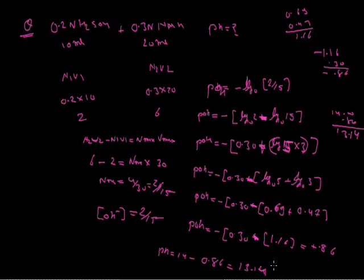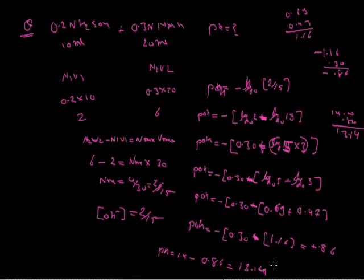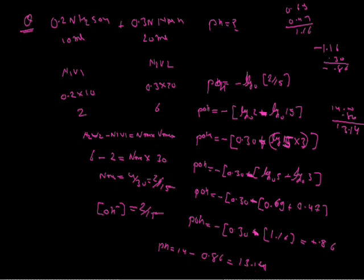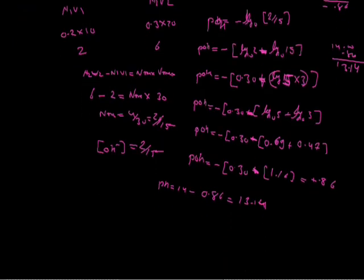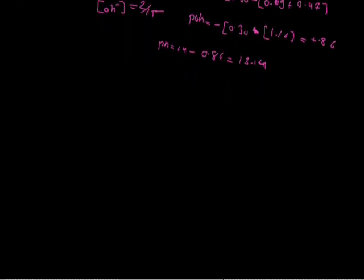So the important summary: if the examiner gives you acid and base in the mixture, first calculate the gram equivalents of acid and base, then check whose gram equivalents are more. If gram equivalents of base are more, use gram equivalents of base minus gram equivalents of acid equals Nmix times Vmix, and Nmix represents concentration of OH minus. If gram equivalents of acid are greater, use acid minus base, and Nmix represents concentration of H+. We have discussed all three categories: acid-acid, base-base, and acid-base.